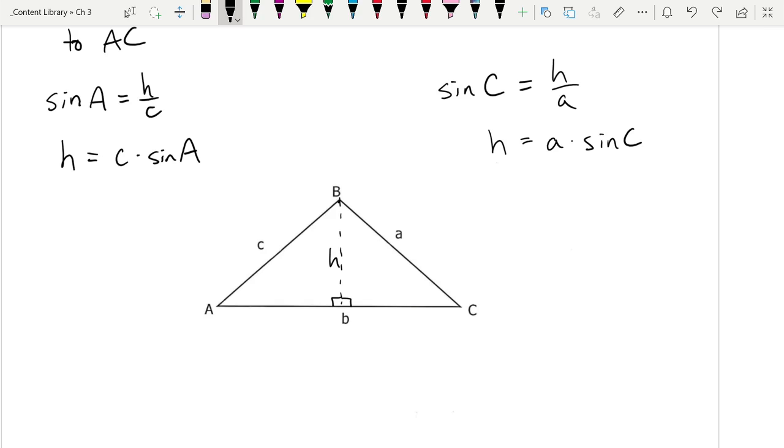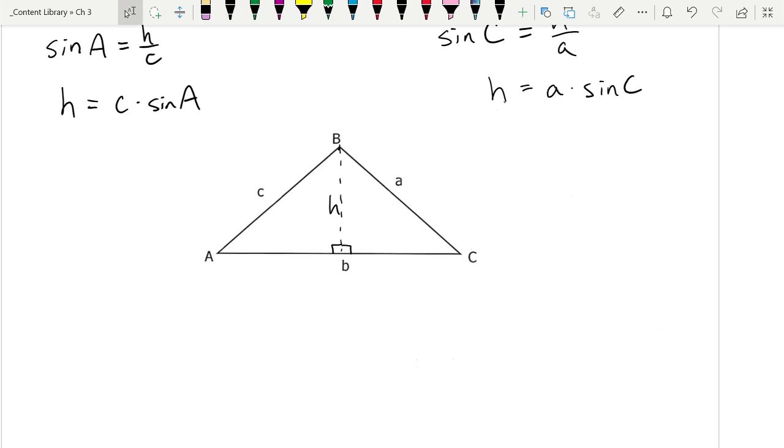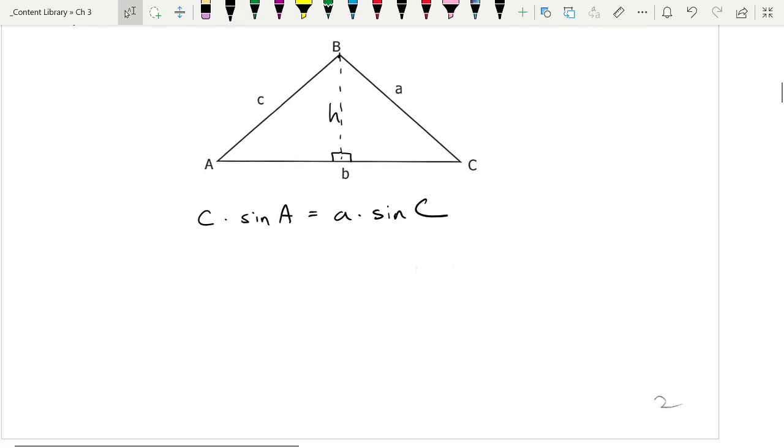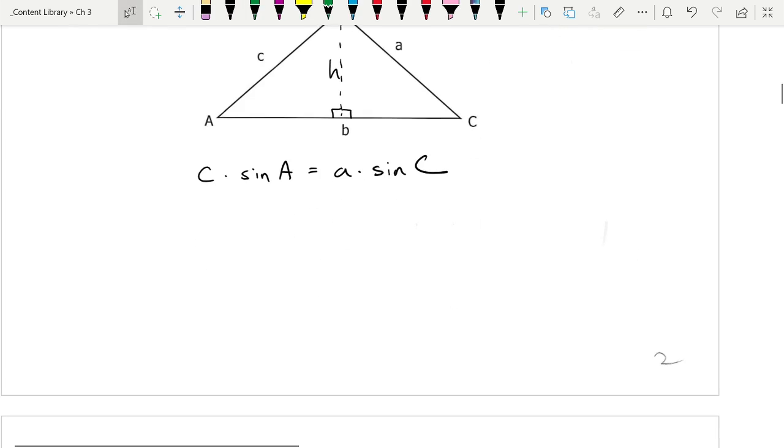And now think about this. We learned this back in unit one. If this height is equal to that expression and the same height is equal to that expression, then those two expressions must equal each other. We call that the transitive property of reasoning. So we can say that C times the sine of angle A is equal to A times the sine of angle C. And we're going to take this little formula we've created into two directions.